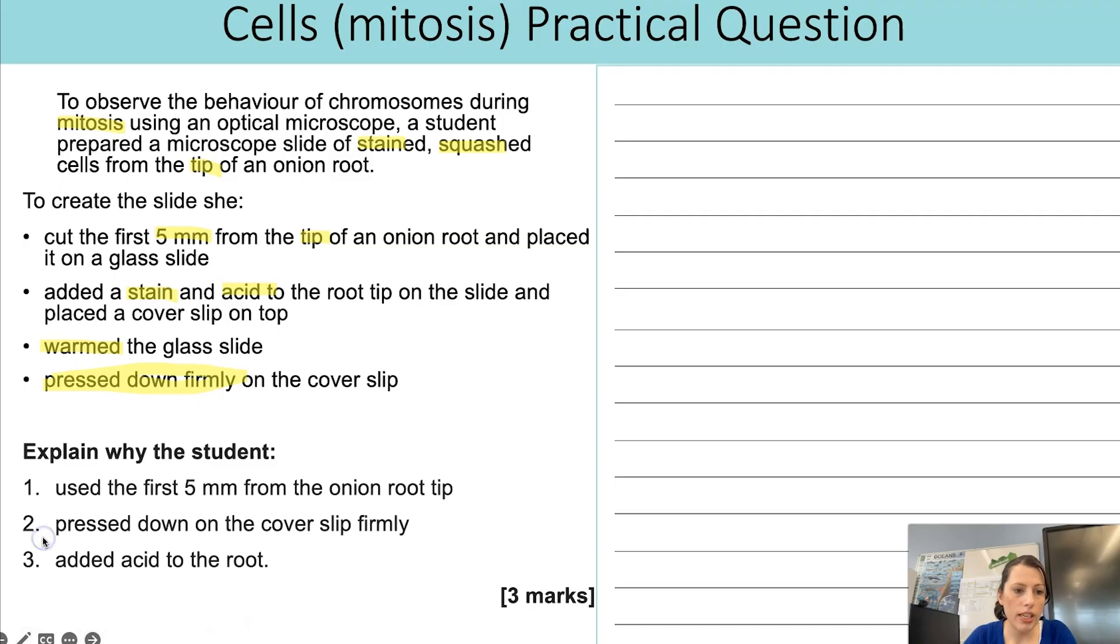So then if we move to the next bit of the question, explain why the student used the first five millimeters from the onion root tip, pressed down on the cover slip firmly, and added acid to the root as well. Now that set of questions comes up basically every time you get an exam question on the mitosis root tip practical. So that's why I've included this one because for this practical you're guaranteed to be asked one of those three questions, if not all of them. So here is what you would say for that answer.